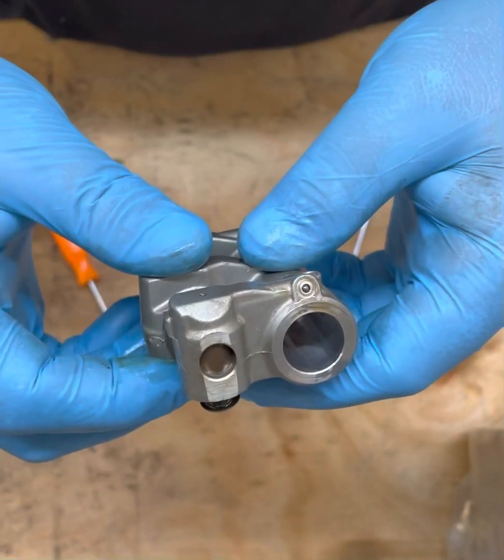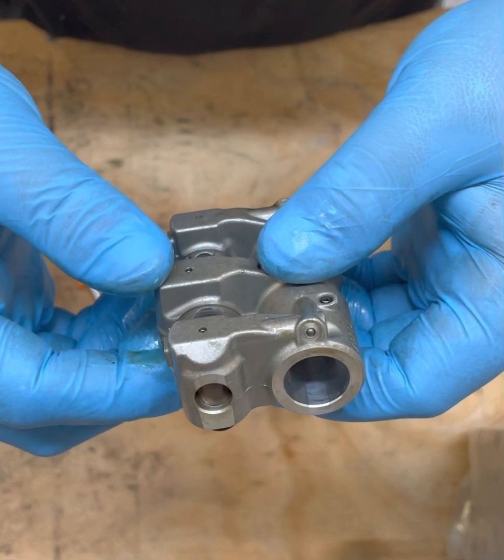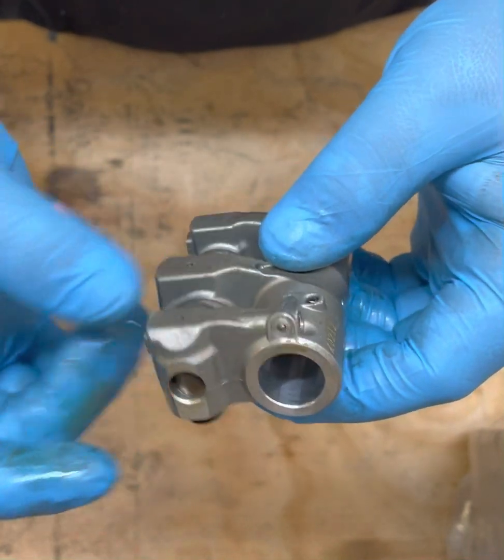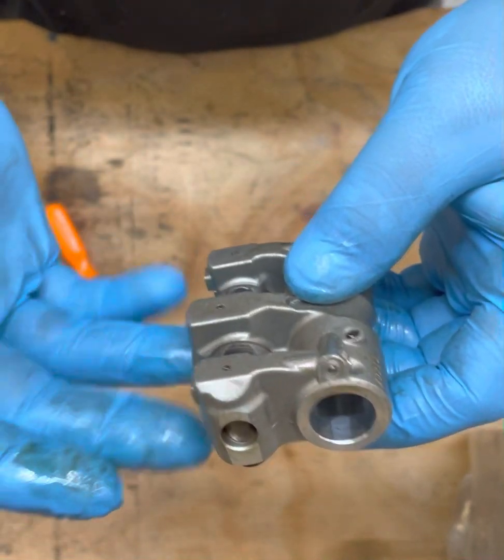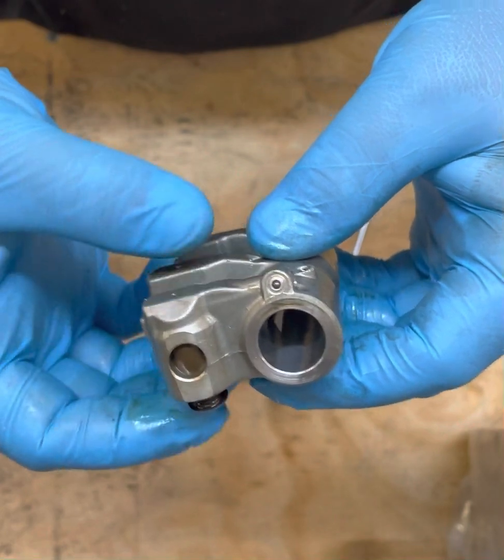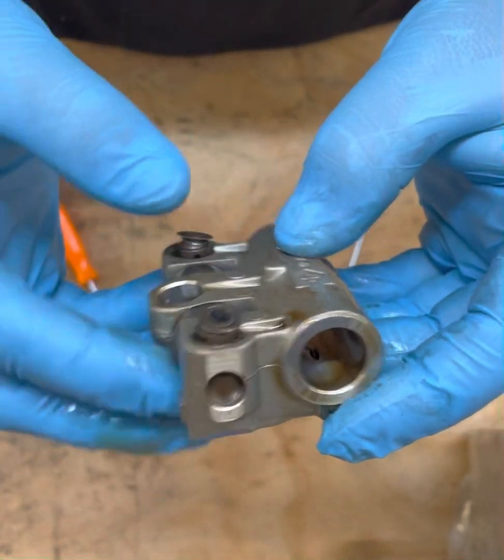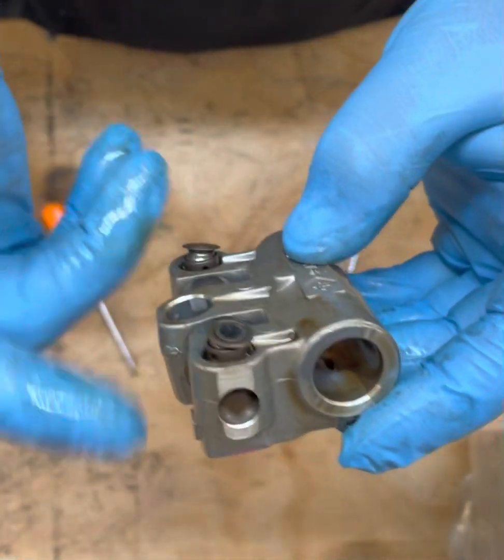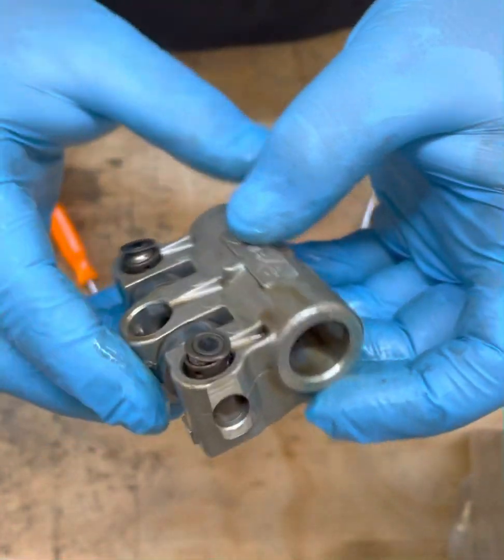Same thing: dry them off, spray air, get all the degreaser off, and then soak them in some oil to displace all the water so you get oil back in the bearings. Make sure you roll your bearings around, get oil in them.